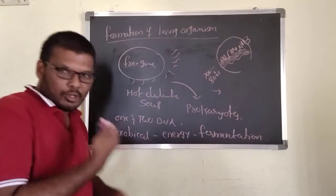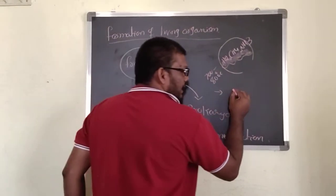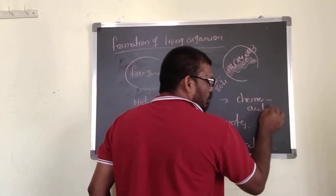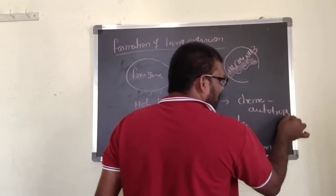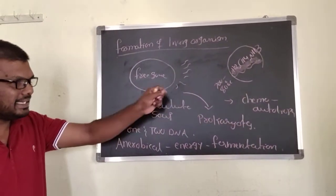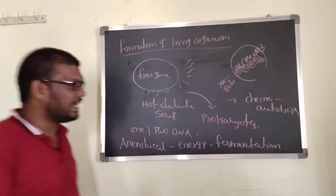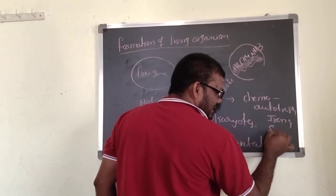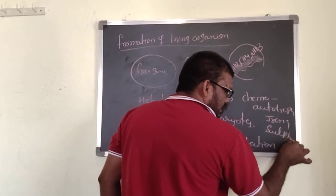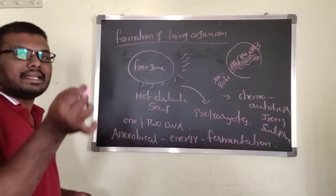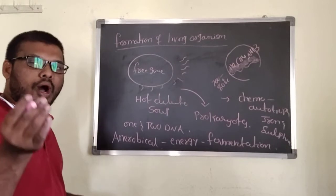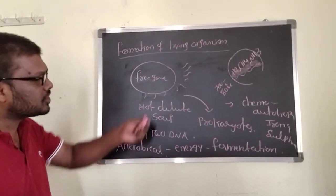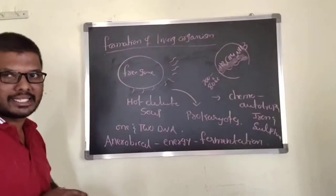Later, during evolution the life goes on, and chemoautotrophs are formed. Chemoautotrophs means mainly iron and sulfur bacteria. They have a carbohydrate-synthesizing enzyme present.